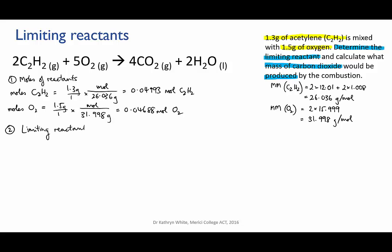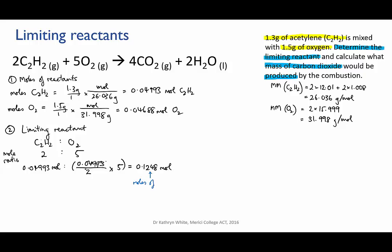Step two is to work out which is the limiting reactant. The mole ratio here is 2 acetylenes to 5 oxygens. So I put in the moles of acetylene present — I could do that with either reactant — and I use that mole ratio to work out how much oxygen would be needed to exactly react with it. I find that 0.1248 moles of oxygen is needed to completely react with the amount of acetylene that I have. Now I compare that with the amount of oxygen that is present, which is 0.04688 moles. What I have present is less than what I need, so the oxygen will run out first and it is my limiting reactant.